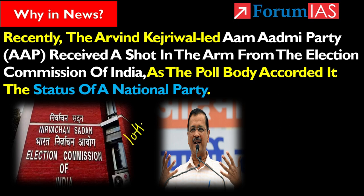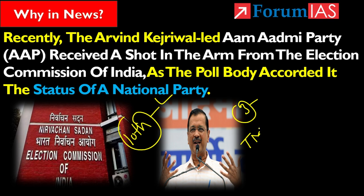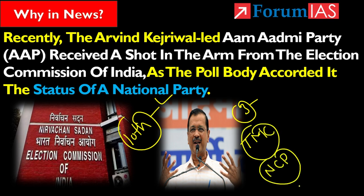On 10th April, the Election Commission of India provided Aam Aadmi Party with National Party status. In this video, we will also discuss the parties which have lost their National Party status — the biggest ones being TMC (Trinamool Congress), NCP (Nationalist Congress Party), and CPI (Communist Party of India).